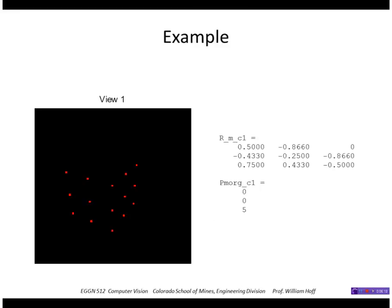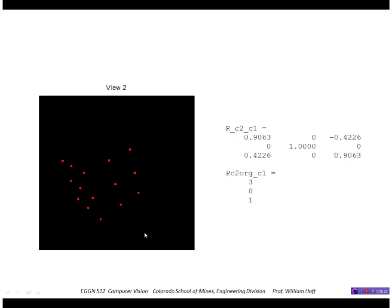So this is what I get if I run that in MATLAB. This is the pose of the model with respect to camera 1. And here are the points that I have generated. And in camera 2, the pose of camera 2 with respect to camera 1, and the model points as if it were seen by camera 2.